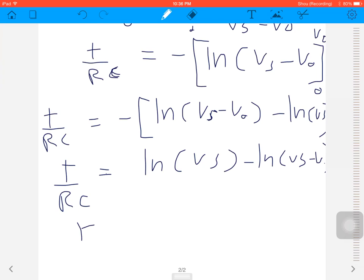t over RC equals log VS minus log of VS minus V out, which equals log of VS divided by VS minus V out, like this.